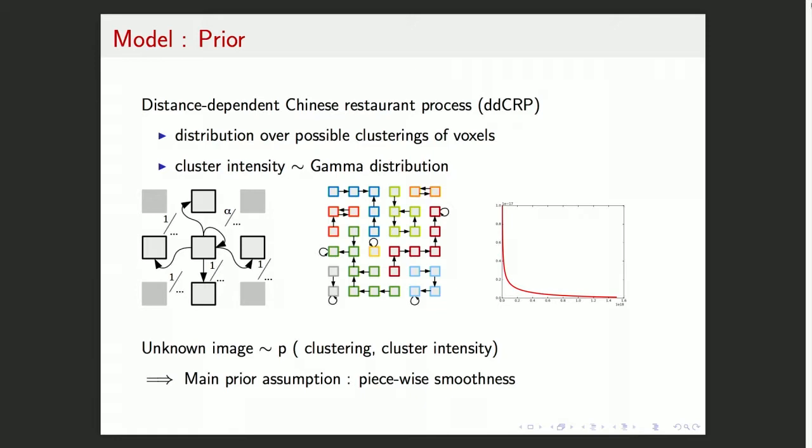Let's see our prior. It's called the distance-dependent Chinese restaurant process. It's maybe not the most well-known distribution. It's a probability distribution over possible clustering of voxels into rather smooth areas. So a sample of the distribution is like the image in the middle. This is a sample of groups, possible groups of voxels that have a similar intensity. So each cluster has an intensity that follows a gamma distribution on the right. You have to believe me that this distribution almost doesn't bring any information into our model, into our PET model about the voxel intensity.